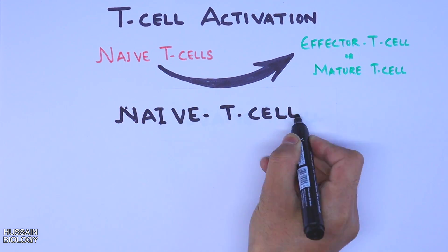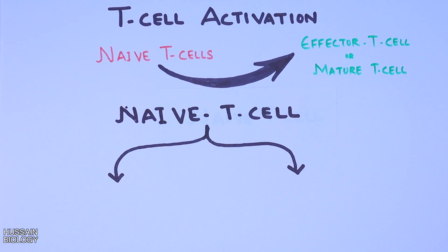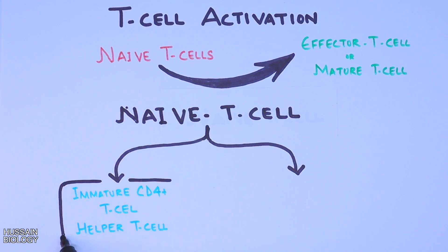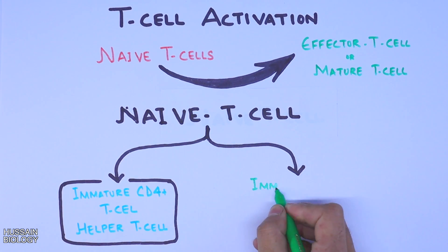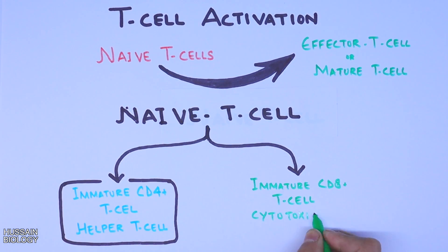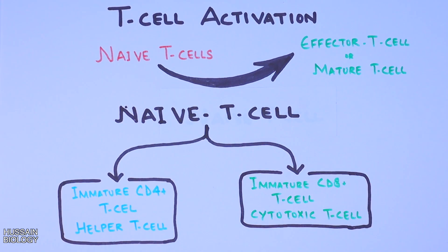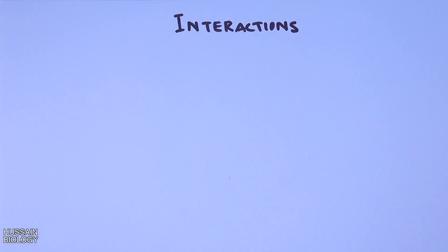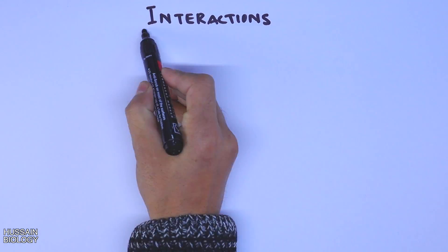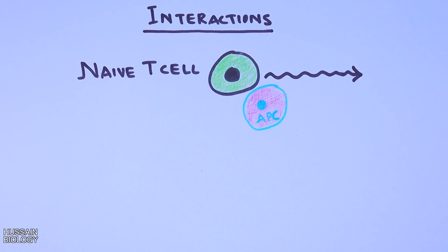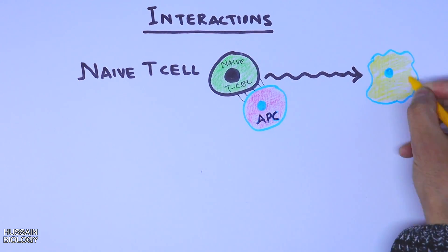We have two different naive T cells: one is the immature CD4 T helper cell and the other is the immature CD8 positive cytotoxic T cell. The naive T cell interacts with the APC, that's antigen presenting cell, and gets activated into effector T cells.